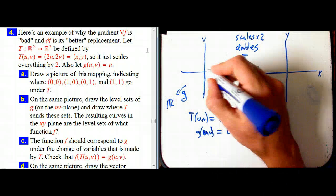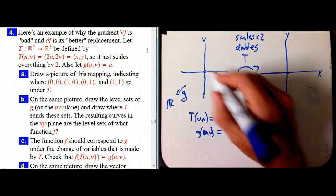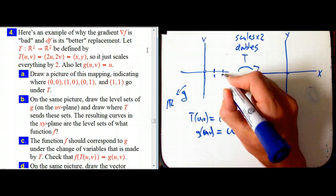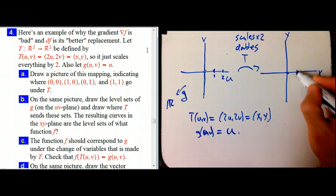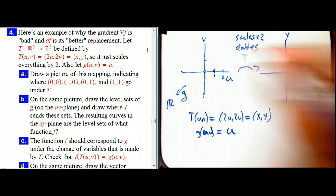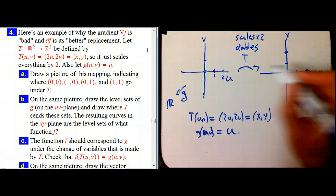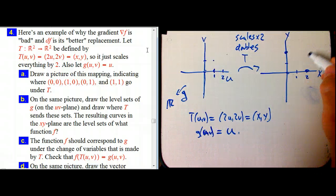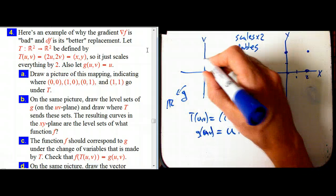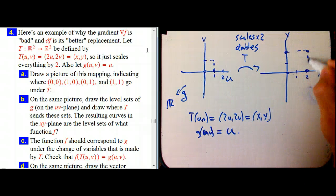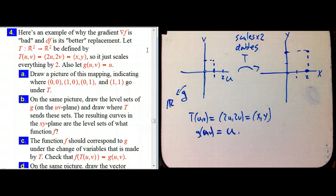So what does this mapping look like? Well, the origin goes to the origin. One zero goes to two zero. Same with zero one goes up to here. One one goes to two two. So like this square goes to this square. It just blows everything up. Magnifies by a factor of two.